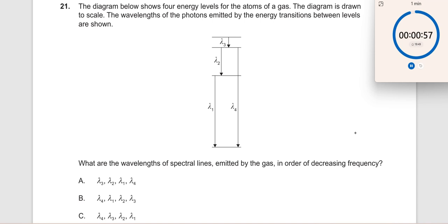21st question. The diagram shows four energy levels of the atoms of a gas. The diagram is drawn to scale. The wavelengths of the photons emitted by the energy transitions between levels are shown. What are the wavelengths of spectral lines emitted by the gas in order of decreasing frequency?